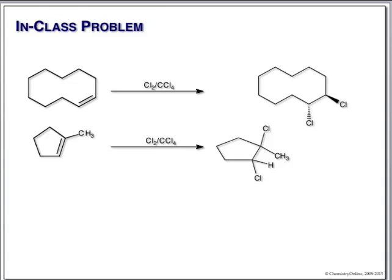The point of doing halogen addition on all ten of these different structures is simply to drive home the point that this really is simple. All you have to remember is just the basics: halogen adds to a double bond, it adds trans, and if you have stereochemistry, make sure you show it.